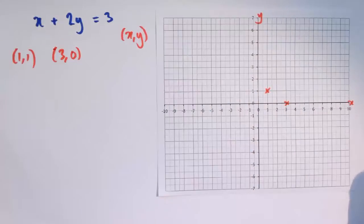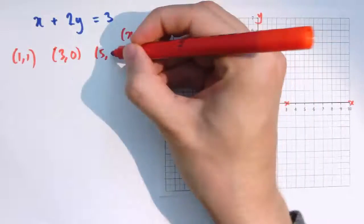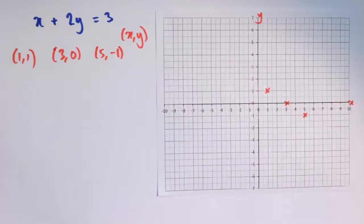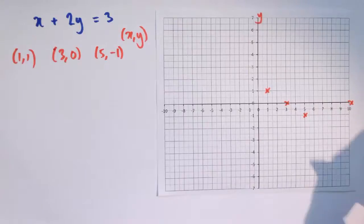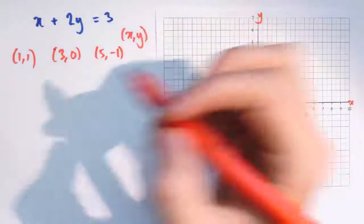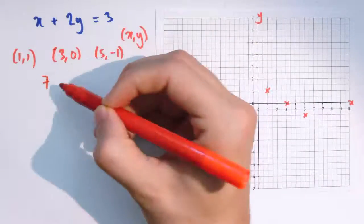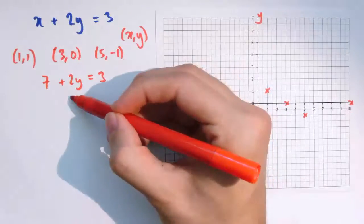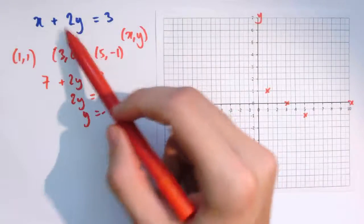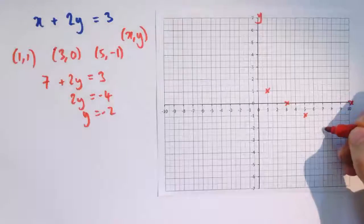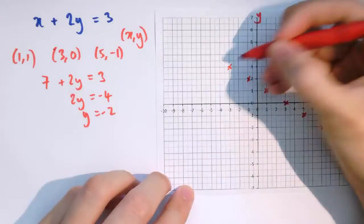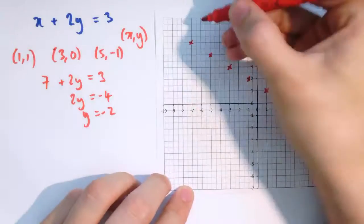Other things that work: I could do (5,-1). 5 minus 2 is 3. Starting to get a bit of a form here. But let's see if this carries on. So what about if I had x is 7? Well then I would have 7 plus 2y equals 3, so 2y is -4, or y is -2. So (7,-2) gives me another point in here. It looks like we're getting a straight line. And actually you can check some further points and see that you really do get a straight line.